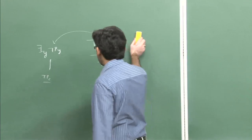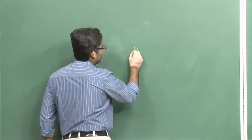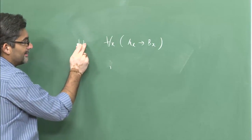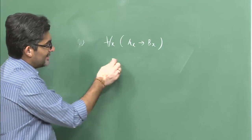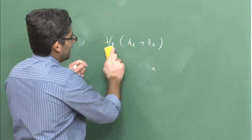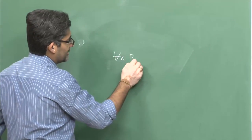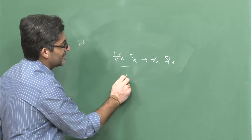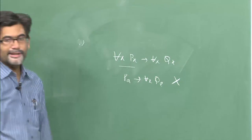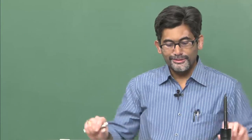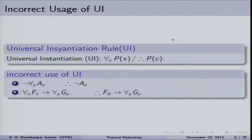Another incorrect application of Universal Instantiation is applying it to only part of a sentence. For example, if you have 'for all x, px implies for all x, qx' and you find an instance only for the first part while leaving the second as is — that is incorrect. Universal instantiation does not apply to parts of sentences; it applies to the whole sentence. If it is applied to only part, that is considered an incorrect application.